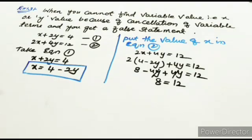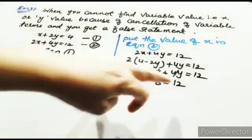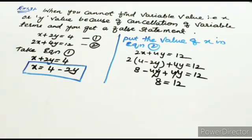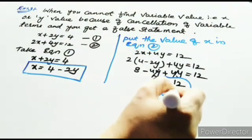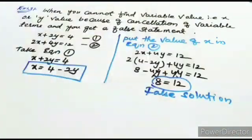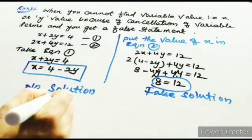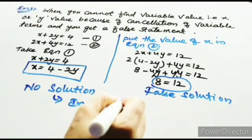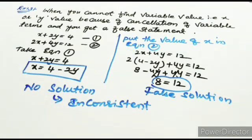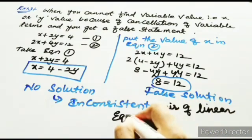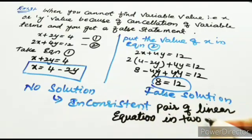In our previous example we got 18 equal to 18, which is a true statement giving infinite solutions. But here we get 8 equal to 12, which is a false statement. When you cannot find the value of x or y because of cancellation of variable terms and you get a false statement, it means you have no solution. When you get no solution, the pair of linear equations is called an inconsistent pair of linear equations in two variables.